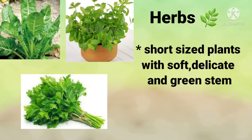Next are herbs. Herbs are very short-sized plants with soft, delicate, and green stems. They can stand upright and they have a short lifespan. Some examples of herbs are mint plant, spinach, and coriander.